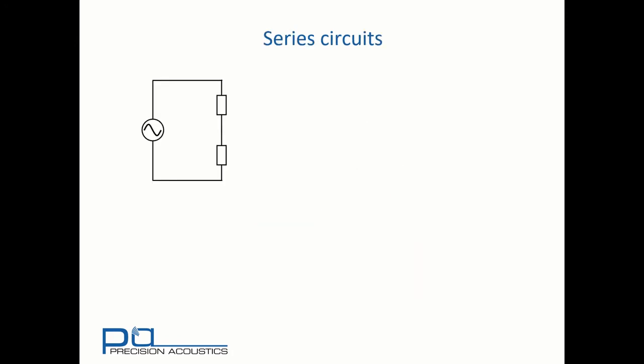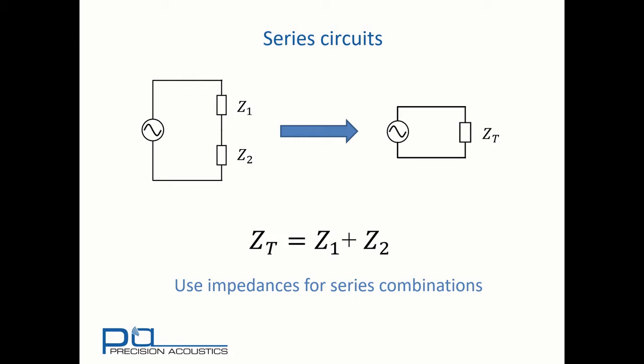Let's now look at how we might combine components. Consider here a series circuit consisting of Z1 and Z2 in series. If we wish to represent this two-component series circuit as a single equivalent impedance, we would find that Zt is simply the arithmetic sum of Z1 and Z2. Therefore, when we're looking at series combinations, the use of impedance is the most effective way of combining these components' values.